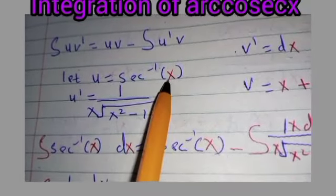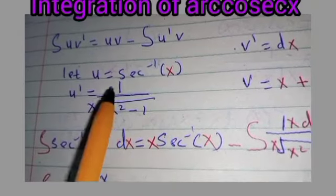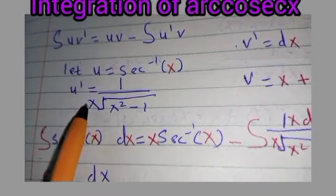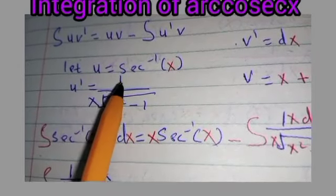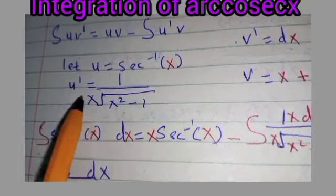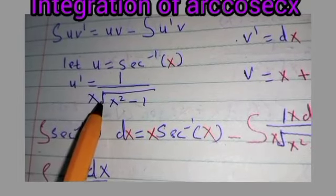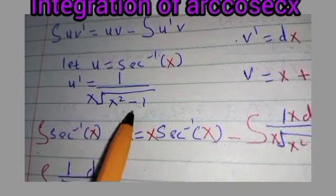When we differentiate u with respect to x, the result will be 1 divided by x multiplied by the square root of x squared minus 1.